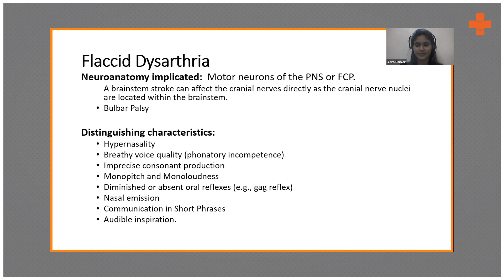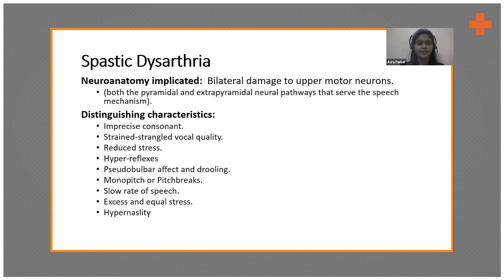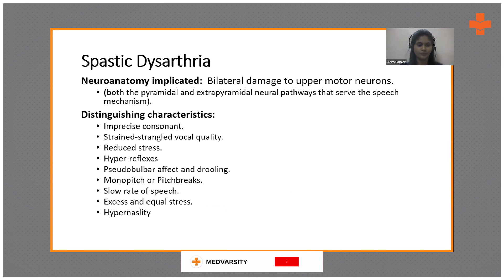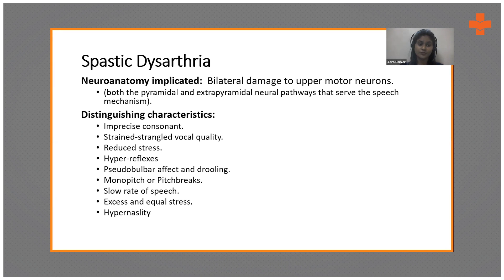Hypernasality and breathy voice quality are the most distinguished characteristics of flaccid dysarthria. Spastic dysarthria is caused by bilateral damage to upper motor neurons — both the pyramidal and extrapyramidal neural pathways must be damaged. The distinguishing characteristic is imprecise consonants and strained, strangled voice quality. The patient appears very effortful during communication. Features also include reduced stress, hyperreflexes, pseudobulbar affect, drooling, monopitch, slow rate of speech, excess and equal stress, and hypernasality.